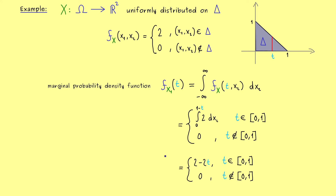We can verify this is indeed a density function because integrating 2−2t over [0,1] gives 1. Importantly, this is not a constant function, so x1 is not uniformly distributed. This is a good example showing that marginal distributions are very important: when you want to extract one component's information from a random experiment, you must calculate its correct marginal distribution, often via the marginal probability density function. I hope this helped, and we'll meet again in the next video. Have a nice day and bye bye.